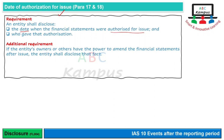پاکستانی law میں جو typical companies हैं उनके अंदर ये allowed नहीं है company law में कि entity के owners financial statements को issue के बाद amend या alter कर सकें। तो यहाँ पर ये fact disclose नहीं किया जाता। लेकिन IAS-10 में ये requirement इसलिए है क्योंकि international community में कुछ countries में ऐसे laws हो सकते हैं जहाँ companies को allowed हो कि वो amendment कर सकें after issue भी। वहाँ entities ये fact disclose करेंगी.